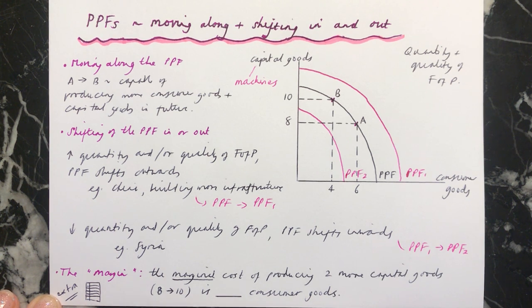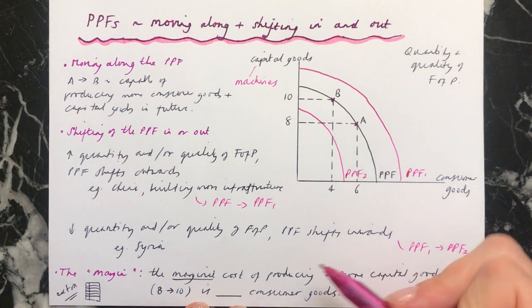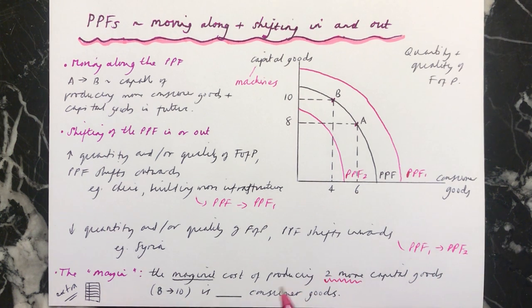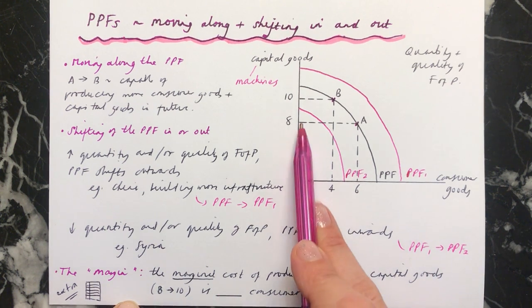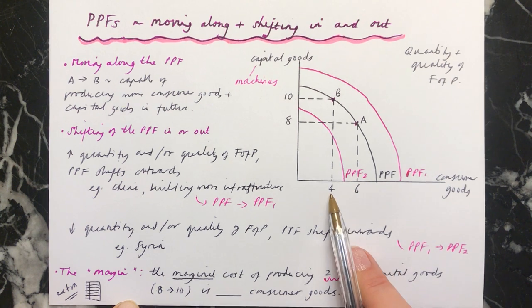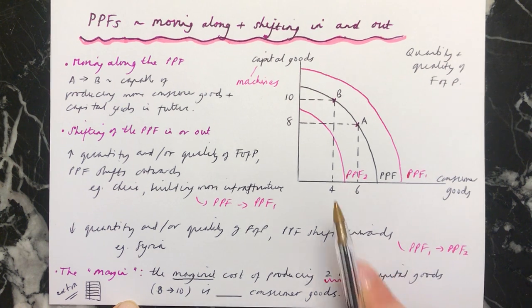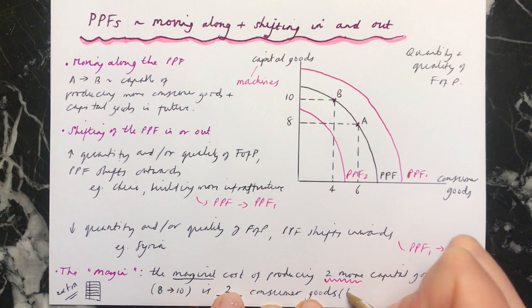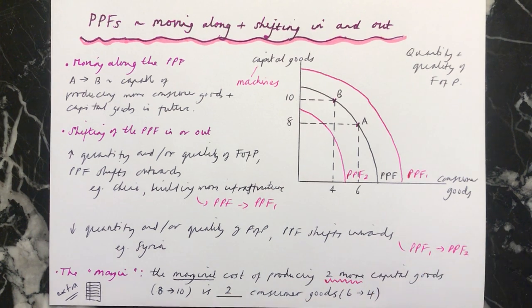In this case, we can say that the marginal cost of producing — the extra amount — is two more capital goods, going from eight to ten. The marginal cost of that, which is the same as the opportunity cost, is going from six to four consumer goods. So it's two consumer goods, because we're going from six to four.